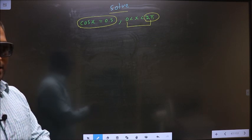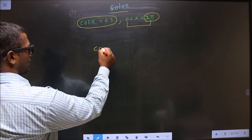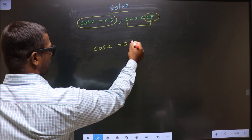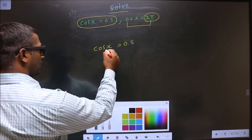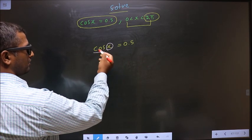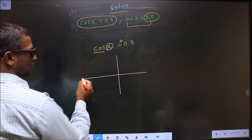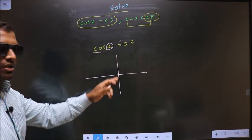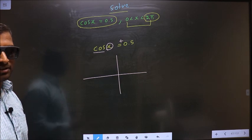The given equation is cos x equal to 0.5. To get the values for x, notice that cos is positive here. So check in which quadrants cosine is positive.